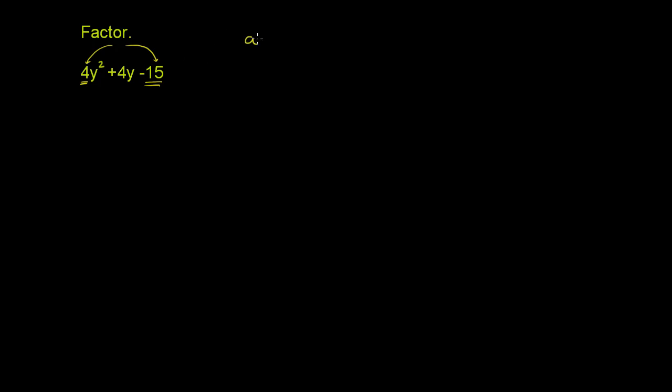But let's just look for those two numbers. So the product is going to be equal to 4 times negative 15, which is negative 60. And their sum needs to be equal to this 4 right over here. So a plus b has got to be equal to 4.